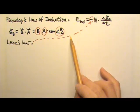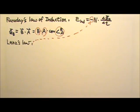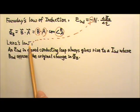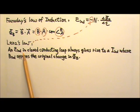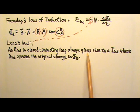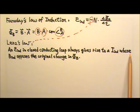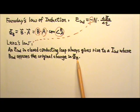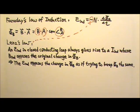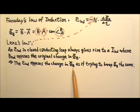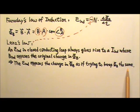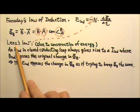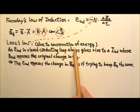This negative sign can be explained by Lenz's Law. Lenz's Law says that an induced EMF in a closed conducting loop always gives rise to a current whose magnetic field opposes the original change in magnetic flux. This means the induced EMF opposes the change in magnetic flux, as if trying to keep the magnetic flux the same as before. Lenz's Law is consistent with conservation of energy.